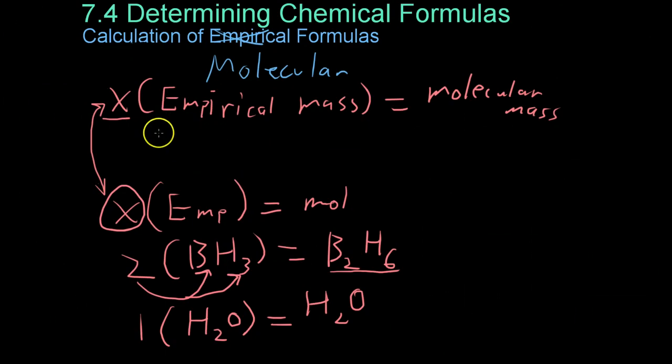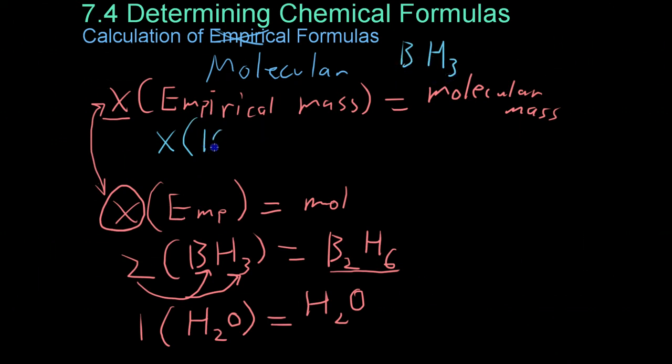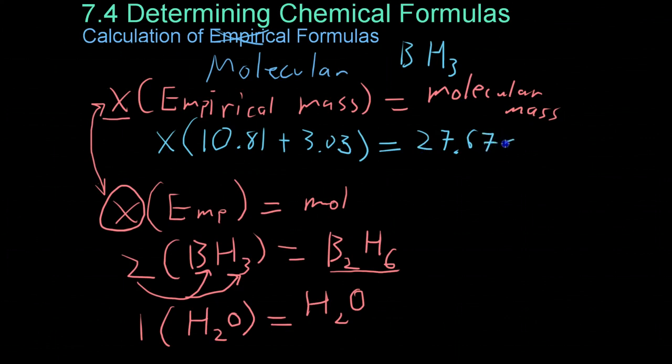Just to give you a quick example of the math it takes to figure out this coefficient x. We can take the empirical mass from the empirical formula of diborane. So, you take the sum of the atomic mass units for each atom. So, that's 10.81 plus 3.03. That is 10.81 for the boron, 3.03 for the three hydrogens. And we know from experimentation that diborane weighs 27.67 amu.